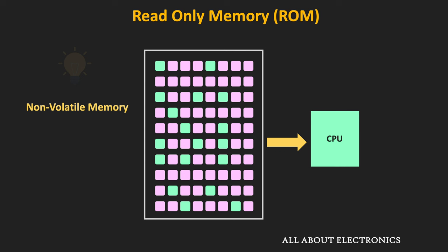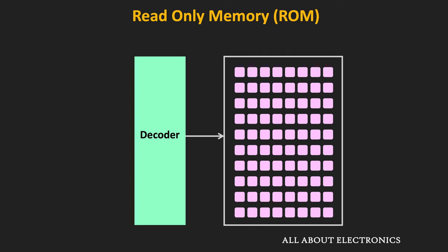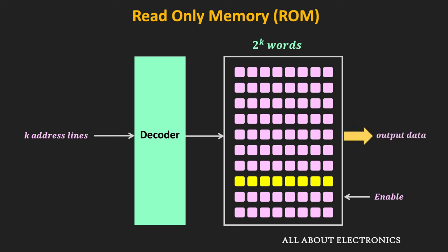Let us see the basic structure of this ROM. Similar to the RAM, if the ROM contains total 2 to the power k words, then with the help of k address lines, it is possible to select any one of the words. Once the ROM is enabled, the data at the specific word will be available at the output. If the word length is equal to n bits, then the output data will be of n bits. That means this 2^k word ROM consists of k inputs and n outputs.